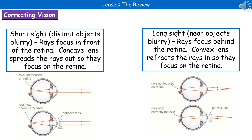Considering where we're actually going to use these types of lens, the most commonplace is correcting eyesight. We've got two different problems: you may be short-sighted or long-sighted. If you've got short sight, things up close are nice and clear, but things in the distance appear blurry. The reason is that rays of light are trying to focus in front of the retina. So we use a concave lens in the glasses, which spreads the rays of light out slightly, meaning they actually focus right on the back of the retina where we want them to.